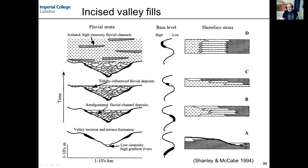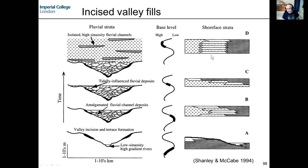In the third stage, sea level is rising fast — the transgressive systems tract. The upper part of the valley begins to drown, showing marine or marine-influenced deposits in the upper valley fill. The shoreline steps back landward. In the fourth stage, sea level is still rising but more slowly, reaching its highest point — the highstand systems tract. The valley is now completely filled with fluvial deposits and floodplain sediments above the valley fill. The shoreline aggrades then progrades.